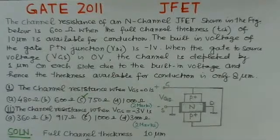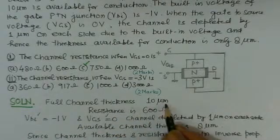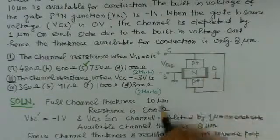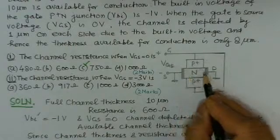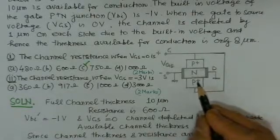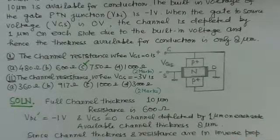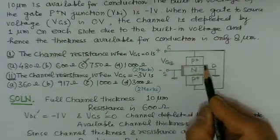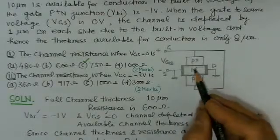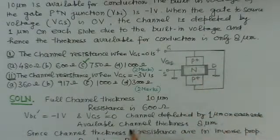Now, what is given in this problem: there is a full channel thickness of 10 micrometers. That means when there is no depletion region, the full channel thickness of 10 micrometers is available, and the resistance of this channel is 600 ohms. Now, if VBI is minus 1 volt and VGS is 0, the channel is depleted by 1 micrometer on each side. So 1 micrometer on each side is consumed, meaning the total channel thickness has reduced from 10 micrometers to 8 micrometers.